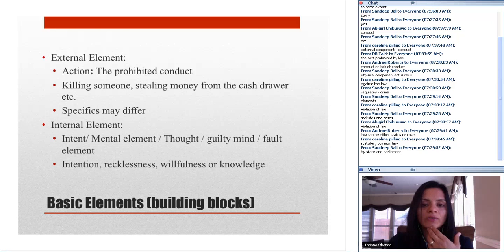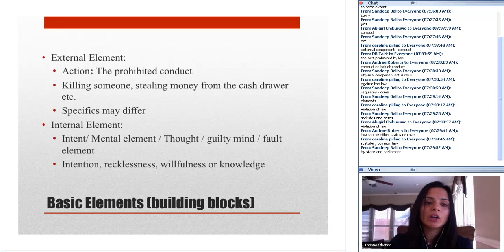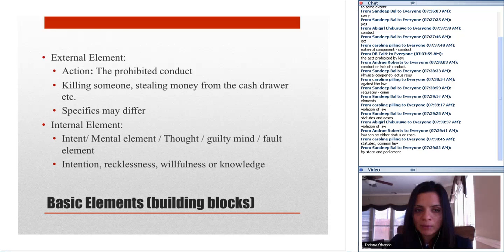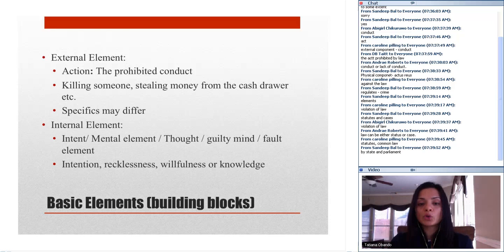When we talk about defenses — and we're going to be talking about defenses later on, probably in the next class — we're talking about when a person may not have criminal liability even though there were elements of the crime present. Even though there was actus reus or mens rea, there won't be liability because the person didn't intend to commit the crime or was forced to commit it.